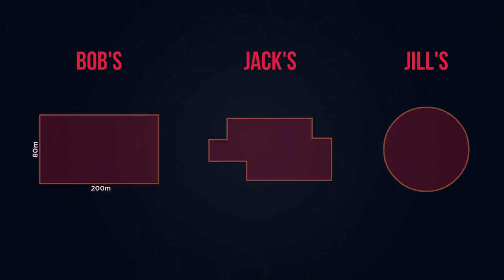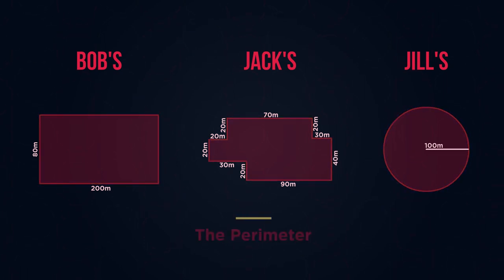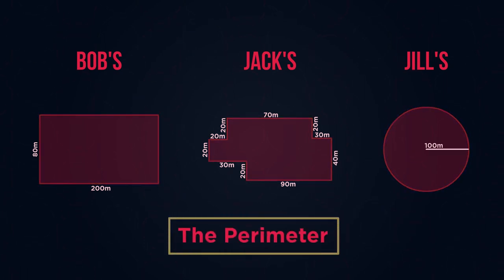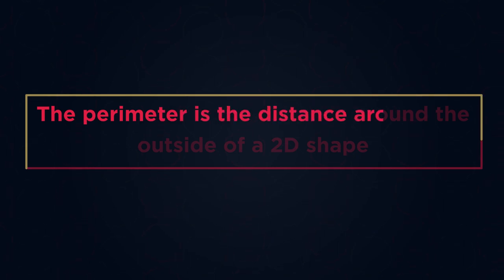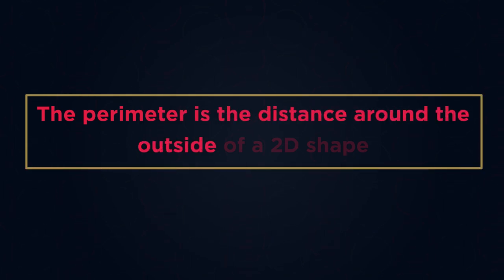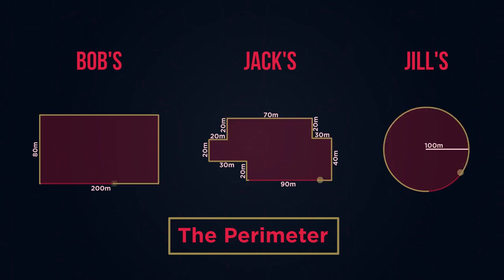In order to determine the length of fencing that they need, we're going to use a concept called the perimeter. The perimeter is the distance around the outside of a 2D shape. So what's the perimeter of each farmer's field? We need to work out the distance around the outside of each field.